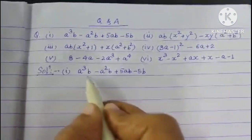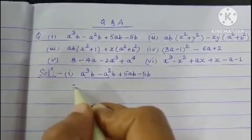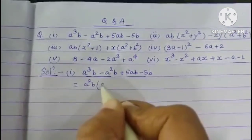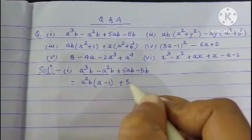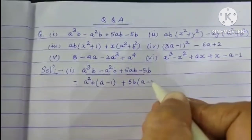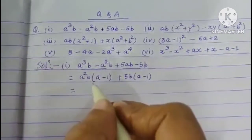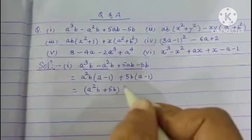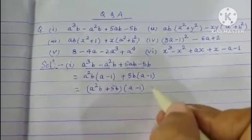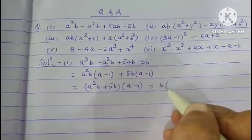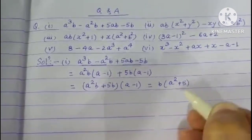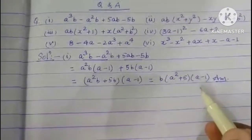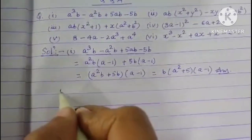First question: a³b - a²b + 5ab - 5b. Grouping: (a³b - a²b) + (5ab - 5b). From the first group take a²b common giving a²b(a - 1); from the second take 5b common giving 5b(a - 1). So we get (a²b + 5b)(a - 1) = b(a² + 5)(a - 1).